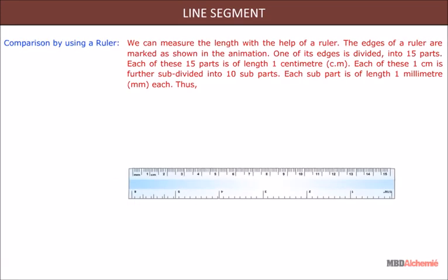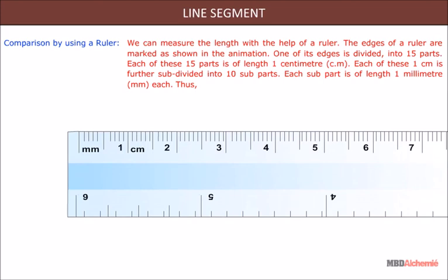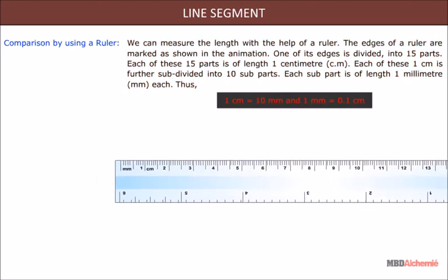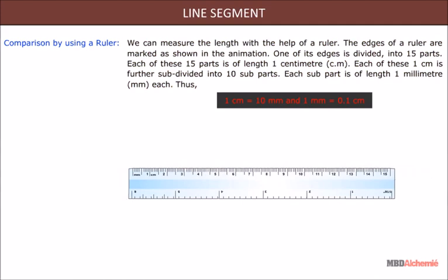Comparison by using a ruler: we can measure the length with the help of a ruler. One edge of a ruler is divided into 15 parts, each of length 1 centimeter. Each centimeter is further subdivided into 10 sub-parts, each of length 1 millimeter. Thus, 1 centimeter equals 10 millimeters, and 1 millimeter equals 0.1 centimeters.